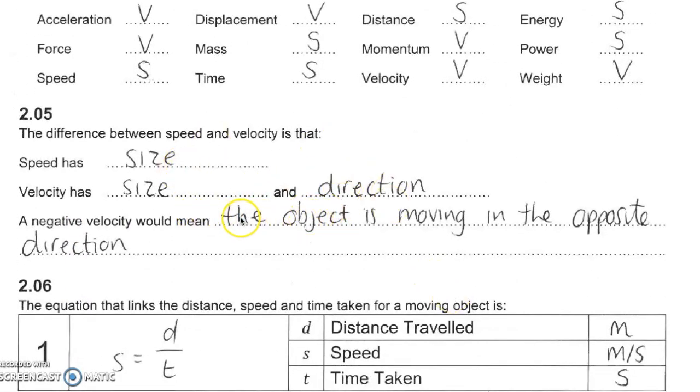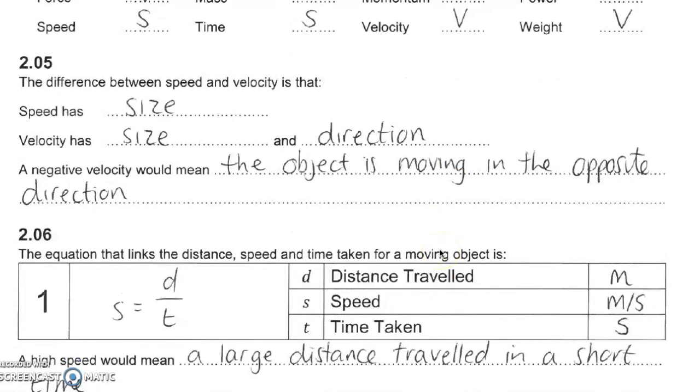Another thing to mention is with regards to vectors, the direction will not always be like a north or south or east or west, but sometimes they will be in the form of pluses and minus signs. When we look at momentum later on, a plus sign will be in one particular direction and then the minus sign will denote the opposite direction. It doesn't really matter which direction you place the plus sign in, as long as you're consistent in your questions.